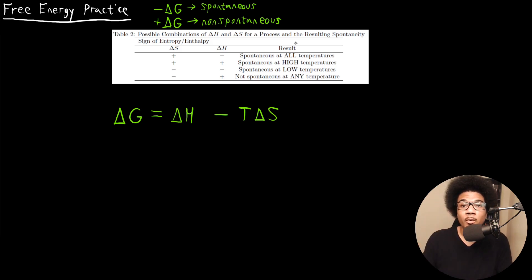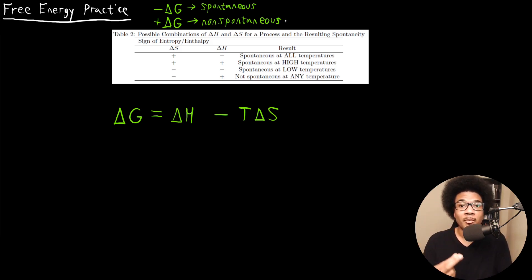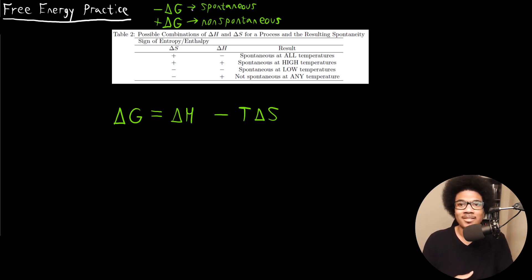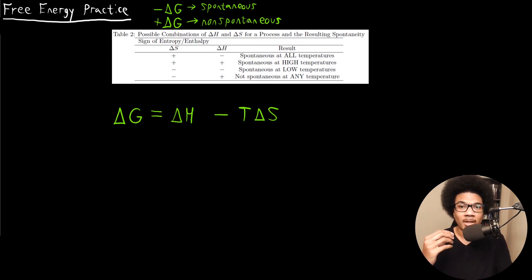In the previous video, we established a link between spontaneity and the free energy. We used the second law of thermodynamics to determine that if the change in free energy is negative — so if it decreases — then that's going to be a spontaneous process, whereas an increase in free energy is going to be related to a non-spontaneous process.